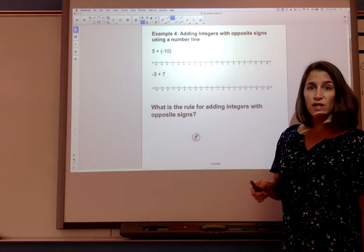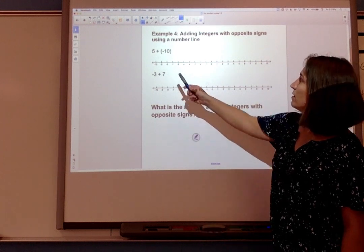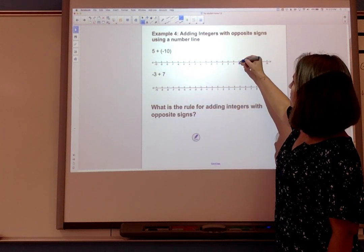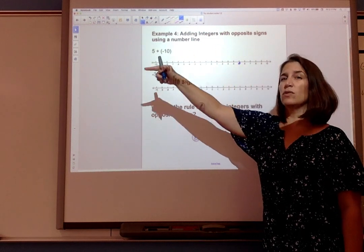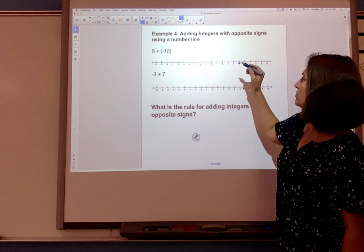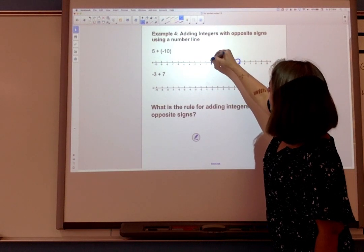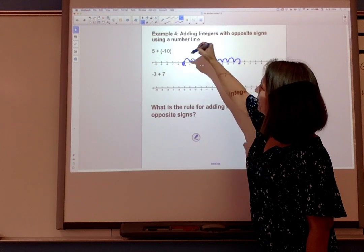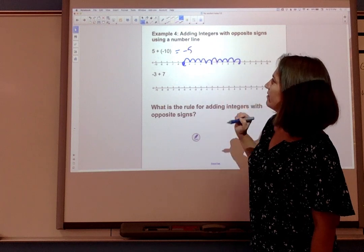We can do this on the number line as well. So here we're going to start with positive 5. That's to the right of 0. And when I add a negative I'm moving to the left in the negative direction here. So I'm going to go 1, 2, 3, 4, 5 and keep going. 1, 2, 3, 4, 5 more. And I end up here at -5.